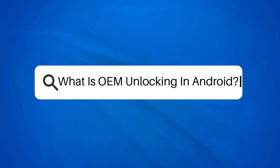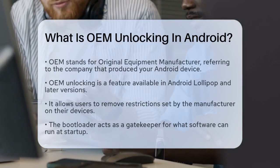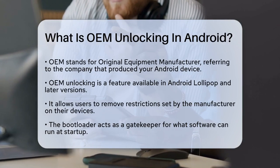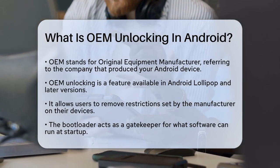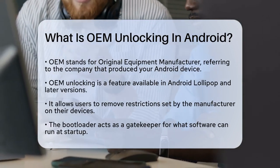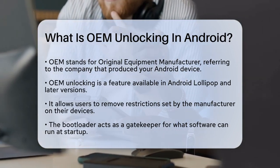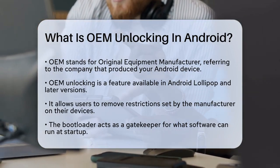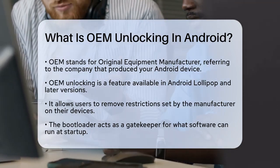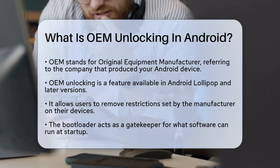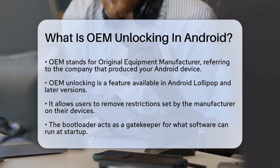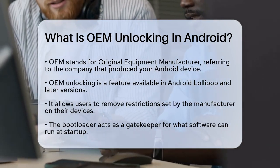What is OEM Unlocking in Android? If you've ever felt limited by your Android device's default settings or wanted to customize it beyond what's normally allowed, you might have stumbled upon the term OEM Unlock. OEM stands for Original Equipment Manufacturer, which is the company that made your Android device. OEM Unlocking is a feature introduced in Android Lollipop and later versions that allows you to remove certain restrictions set by the manufacturer.